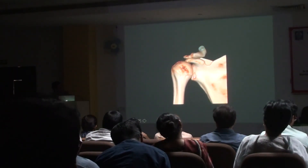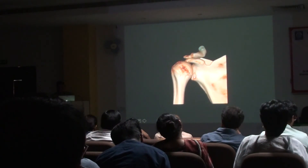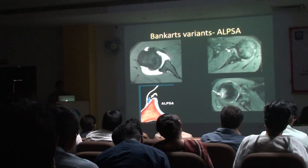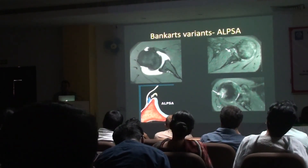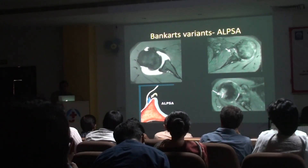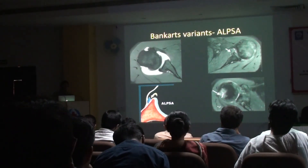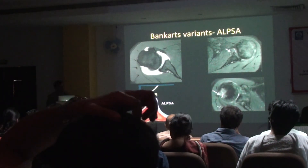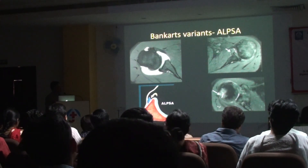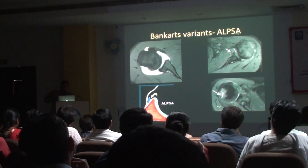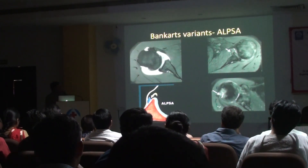Then come all your labral variants. ALPSA — anterior labral ligamentous periosteal sleeve avulsion. As the name suggests, the labrum gets ripped out and the periosteum gets ripped out. I've given two examples — one is an arthrographic image and one is a schematic diagram.